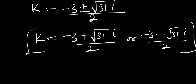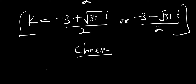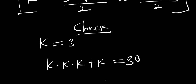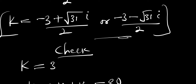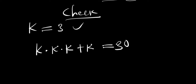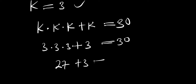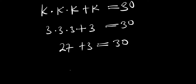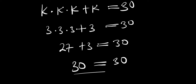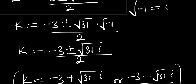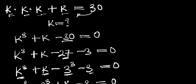We have one real solution: k equals 3. Let's verify it satisfies the original equation k × k × k + k = 30. Substituting k = 3: 3 times 3 times 3 plus 3 equals 30. That gives 27 plus 3 equals 30, and 30 equals 30. The real solution is confirmed as k equals 3, and we also have two complex solutions.